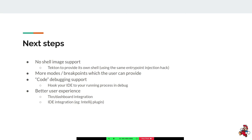We also want to support more modes and breakpoints that the user can provide. We demoed the only mode currently supported, which is the 'on failure' mode. We'd like to add more things like debug on each step or specify the steps you want to debug. We need to support those kinds of things and probably the same on the pipeline itself — being able to say 'I want these tasks to be debuggable but not the other ones'.